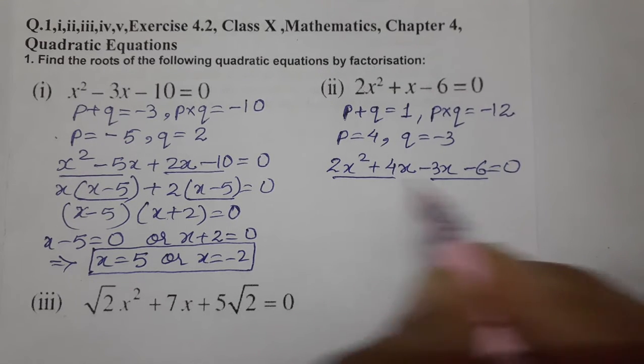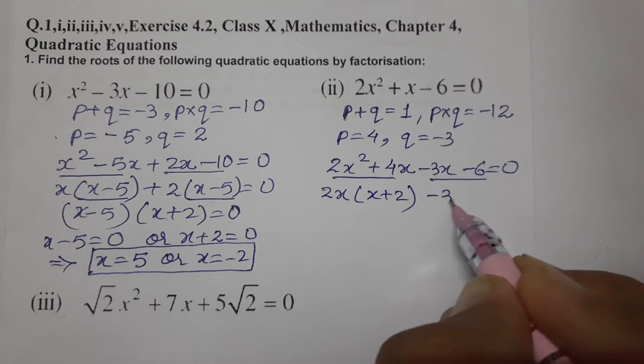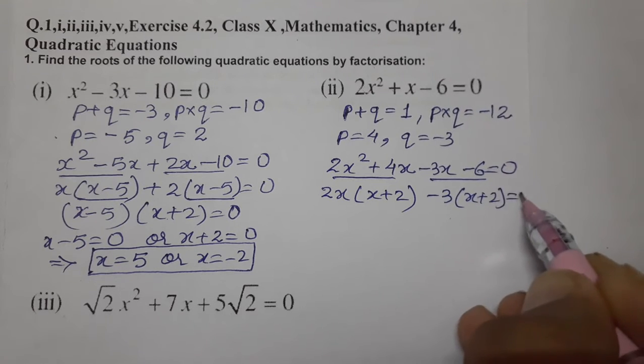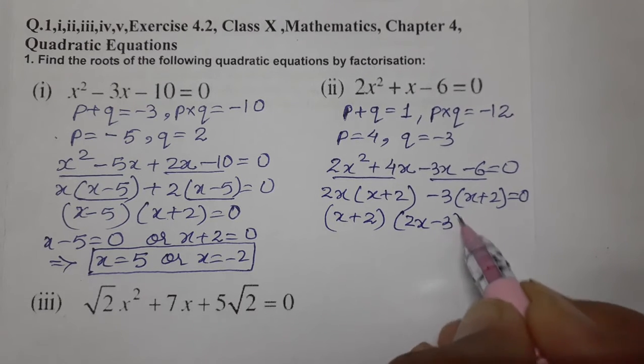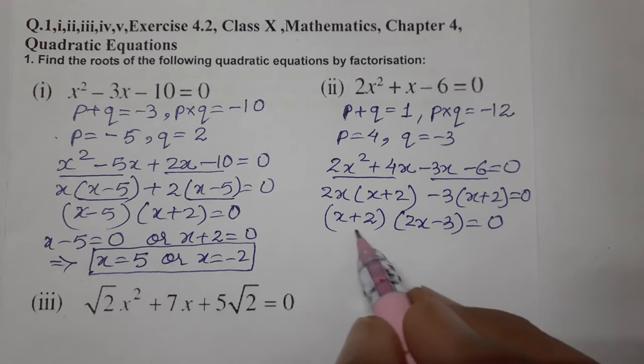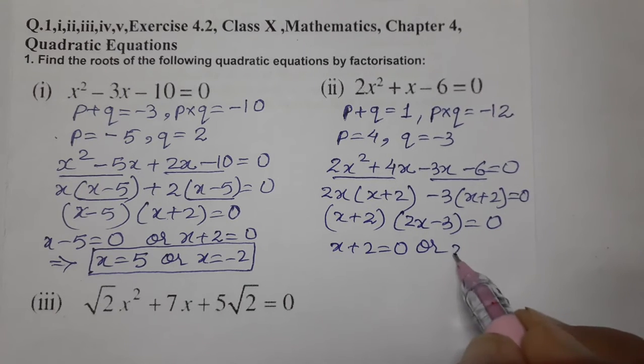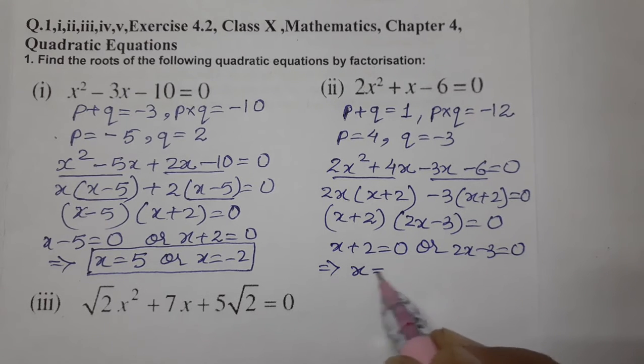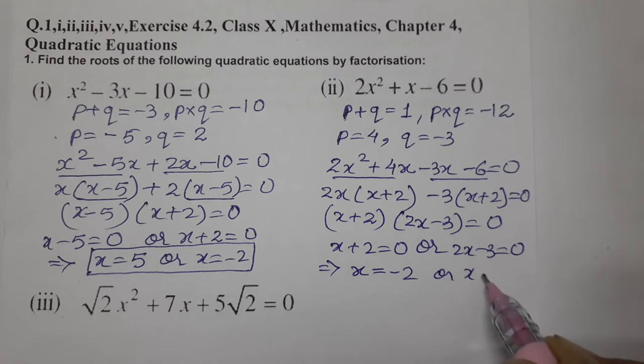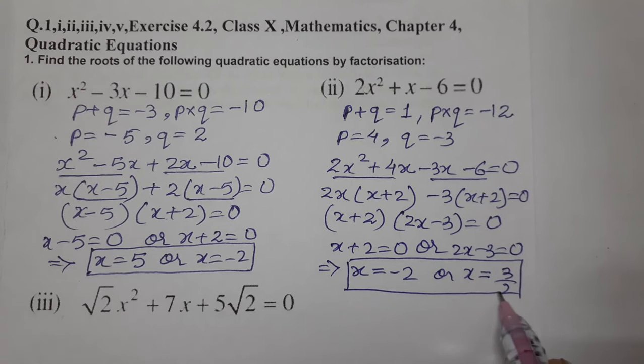We can write 2x² + 4x - 3x - 6 = 0. Take common in pairs: 2x(x + 2) - 3(x + 2) = 0. Taking (x + 2) common: (x + 2)(2x - 3) = 0. So x + 2 = 0 or 2x - 3 = 0. This gives x = -2 or x = 3/2. These are the two roots of the quadratic equation.